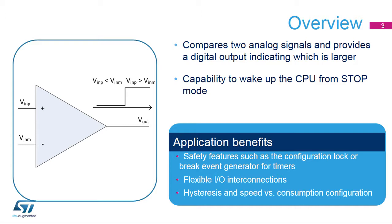Applications can benefit from the flexible configuration of comparator properties, which can be locked for safety reasons. Another safety feature of the comparator is its ability to generate a brake signal for timers, allowing you to safely stop the generation of PWM driving signals.